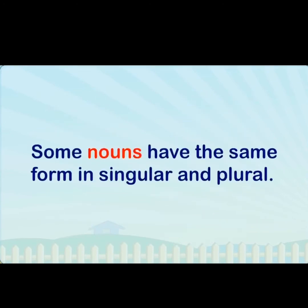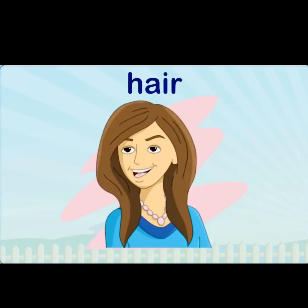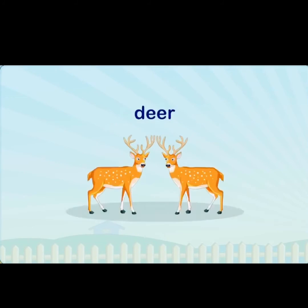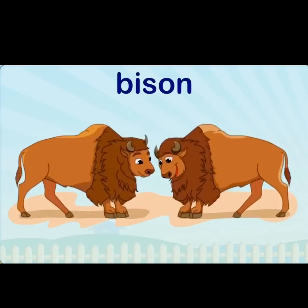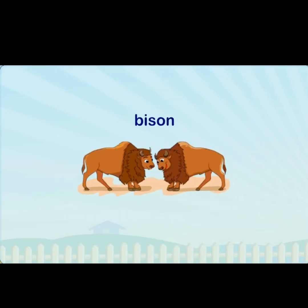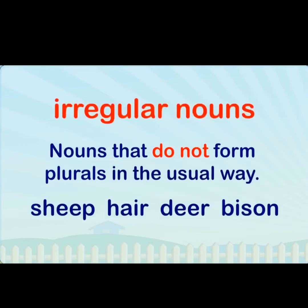Some nouns have the same form in both singular and plural. For example: sheep, hair, deer, bison. These nouns do not form plurals in the usual way; they are irregular nouns.